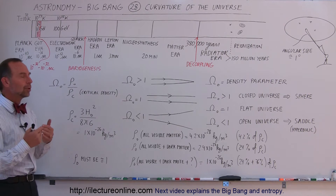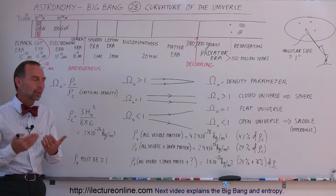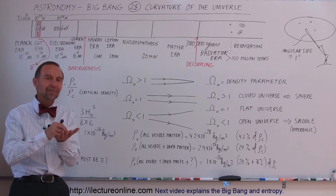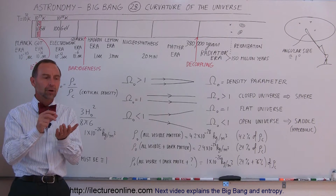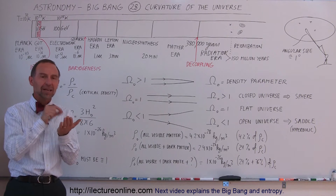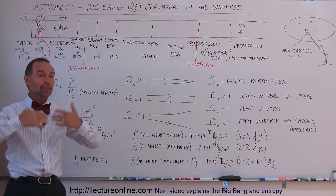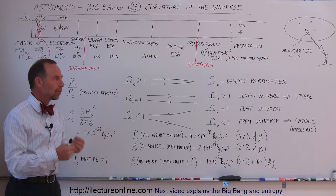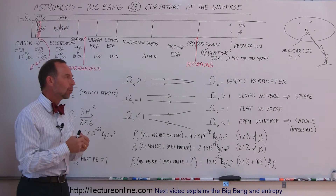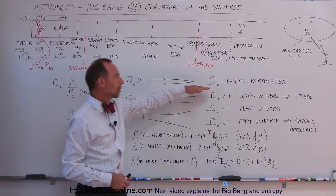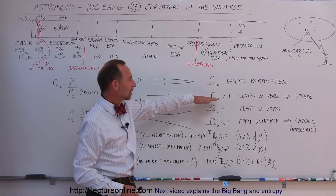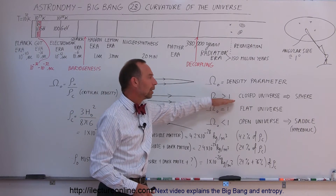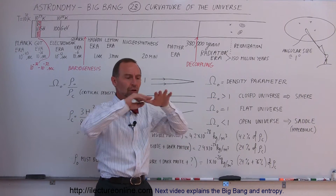What we do understand is that there is what we call a density parameter — a number calculated based upon the density of all the matter and the energy in the universe. When we calculate that, if the density parameter is greater than one, we have a closed universe.